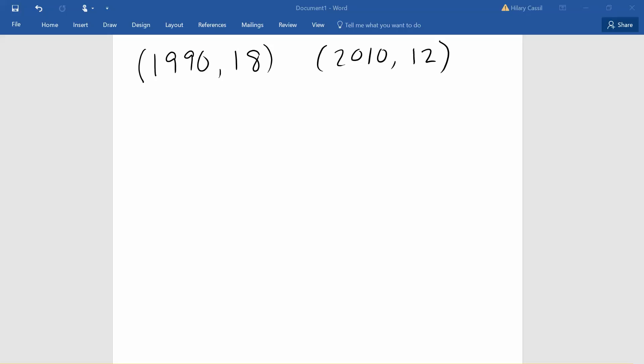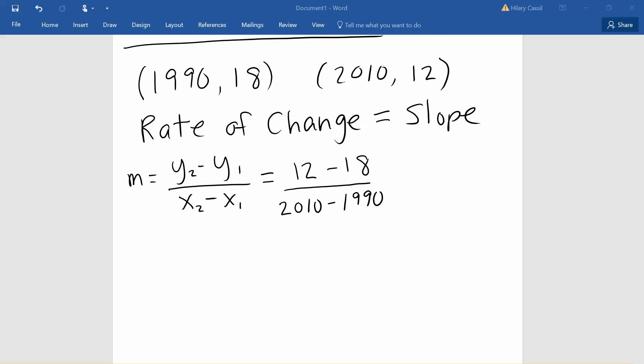So we're first going to consider rate of change which we know is the same thing as slope. Recall that we find the slope by taking the difference in our y values divided by the difference in our x values. So in our case here this is going to give us 12 minus 18 divided by 2010 minus 1990. We can see that we get a final slope of negative 0.3.